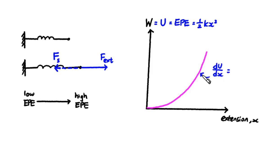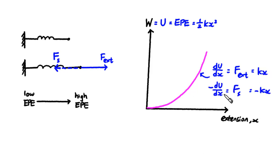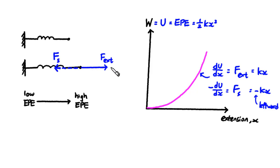So what does the energy gradient of the EPE graph correspond to? It is the external force, or kx. And it is the negative potential energy gradient that gives you the spring force. The negative sign tells us that the spring force is leftward. Notice the pattern: the external force is always pointing in the direction of higher EPE. To increase EPE, the external force and the displacement must be in the same direction. The spring force, on the other hand, is always trying to pull you towards lower elastic potential energy.